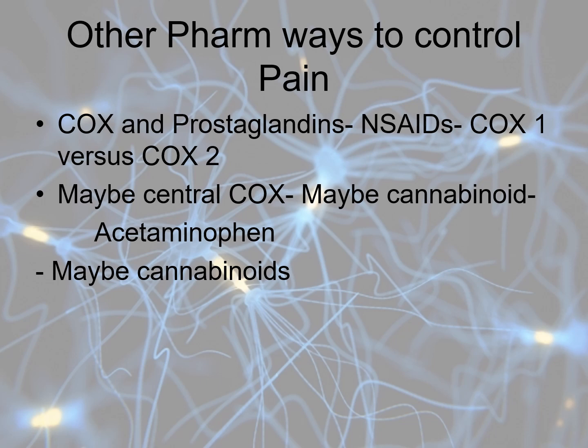There are other pharmacologic ways to treat pain, though non-pharmacologic methods like acupuncture, physical therapy, and massage are important too. Pharmacologically, we know that when nerve fibers are stimulated, they also trigger cyclooxygenase and prostaglandins. If we block those pathways, we can decrease inflammation and decrease pain.